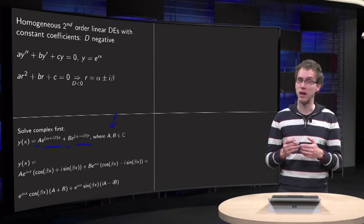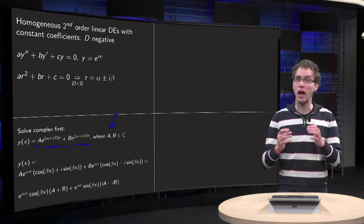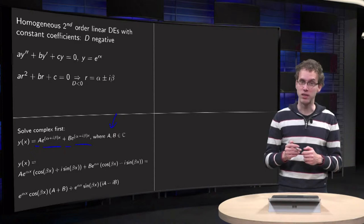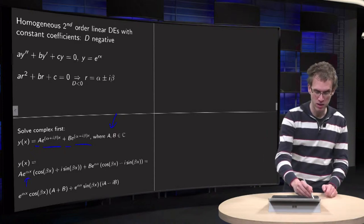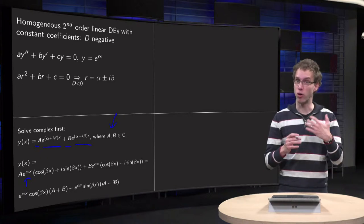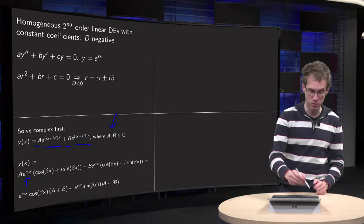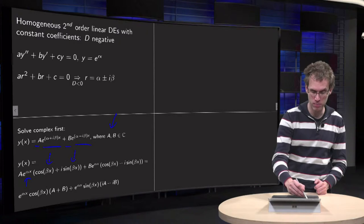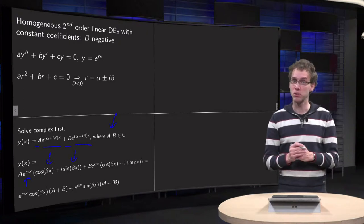You can write down what those exponents are. You get e^(αx) times e^(iβx). That becomes, with Euler's formula, cos(βx) + i·sin(βx). So like this. And for the other one, you can do the same trick.